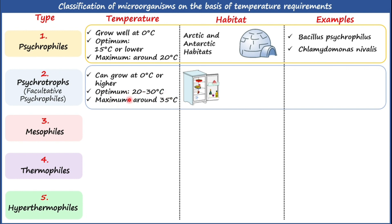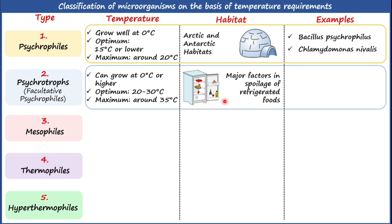The maximum temperature at which psychrotrophs can grow is around 35°C. To study psychrotrophic populations, we can isolate them from stored refrigerated foods, as these microorganisms are one of the major factors involved in the spoilage of refrigerated food items.